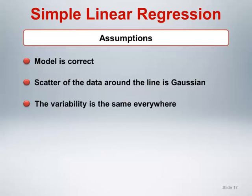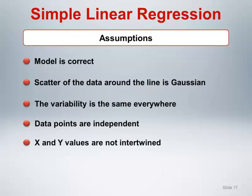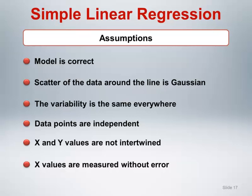Additional assumptions include the following. The data points are independent of each other, meaning that although each subject has both an X and a Y value, the data values of different subjects are not related in any way. The X and Y values are not intertwined, meaning that the value of X is not used in any way to calculate the value of Y. The X values are measured without error — the linear regression model assumes that the X values are known. If the measurement of X is not precise, the simple linear regression model may be inadequate, and a more complicated measurement error model may be required.